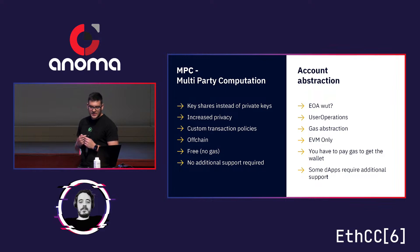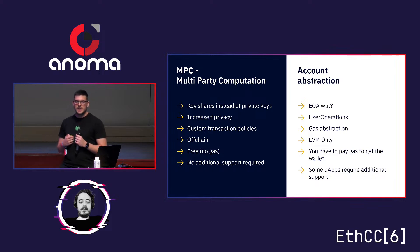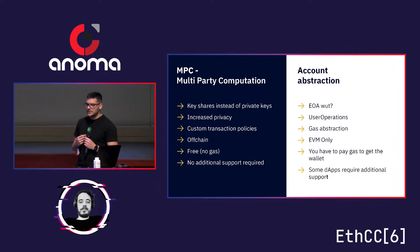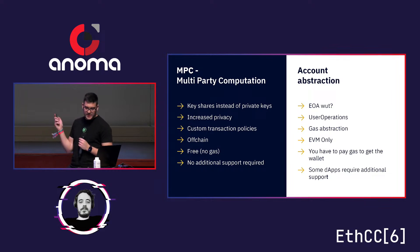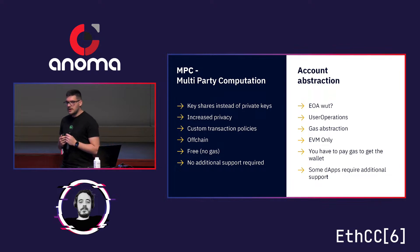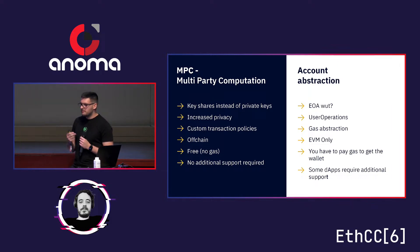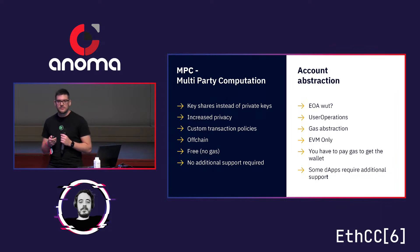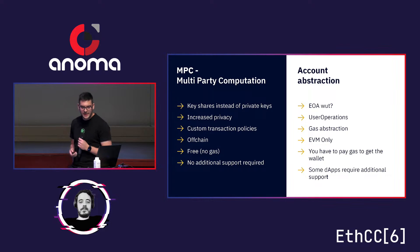A few downsides of account abstraction: it's EVM only, and you have to pay fees to deploy a wallet — it costs around 10 or 15 dollars to deploy an Argent wallet on Ethereum mainnet, which is not good. Also, some dApps require additional support; not everything works out of the box. If you're a developer, imagine going to your manager and saying: yeah, we need to support EIP-4337, but that's for 2% of the user base instead of fixing this button that's been broken for months. That's a hard sell.